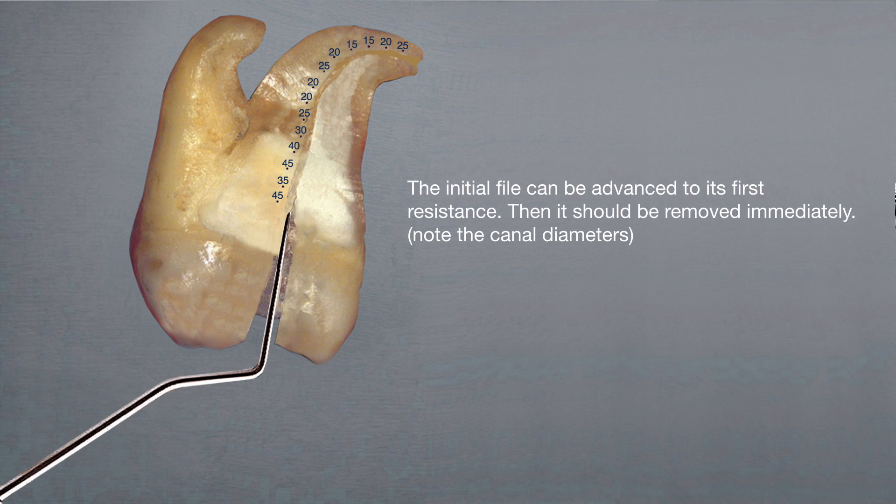The initial file can be advanced to its first resistance. Then it should be removed immediately. Note the canal diameters indicated alongside the canal.